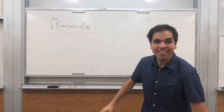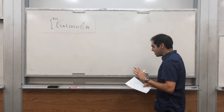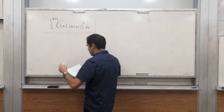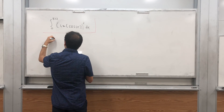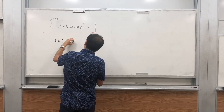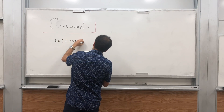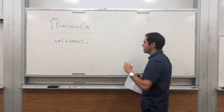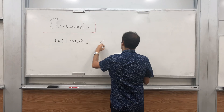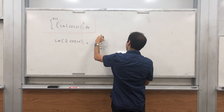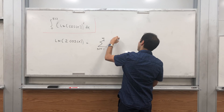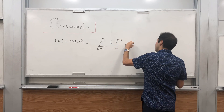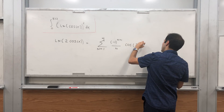You'll see it's actually not as bad as you think, because it's basically just based on the following identity: ln of 2cos(x) can be written very elegantly as a Fourier series, namely as the sum from n=1 to infinity of (-1)^(n+1) / n times cos(2nx).